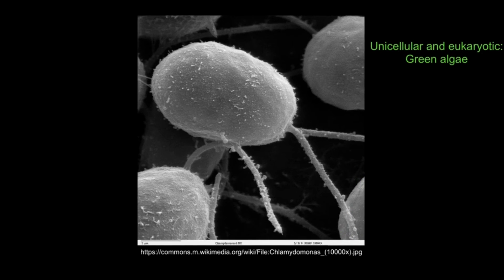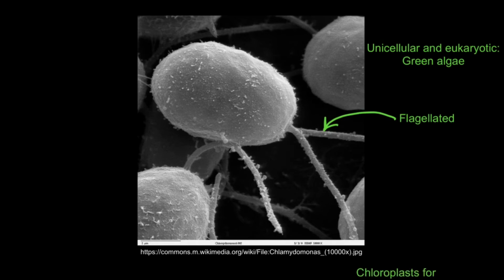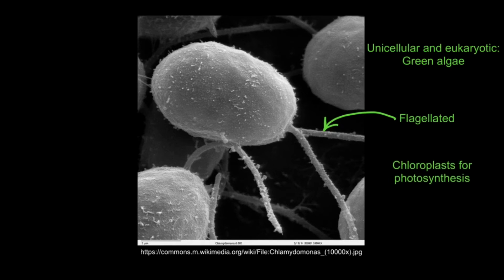Chlamydomonas is a unicellular and eukaryotic organism, commonly known as green algae. They are flagellated, that is to say that they have flagella, and these are used for locomotion. They also contain chloroplasts, and this is because those are the site of photosynthesis, and Chlamydomonas are photosynthetic organisms.